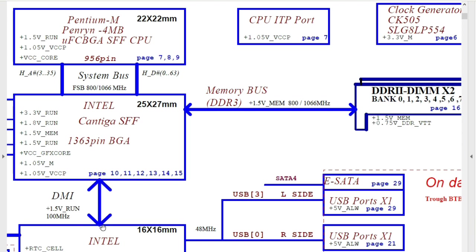The transmission speed of data between the GMCH and ICH is very low, but between the processor and GMCH it is very high because the FSB frequency is high. We also have the connection between the GMCH and the DDR2 memory via the memory bus, with a speed also very high — 800 to 1066 megahertz, the same as the FSB frequency. This is the working principle.